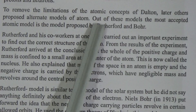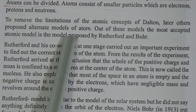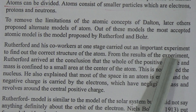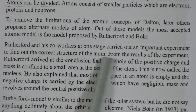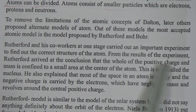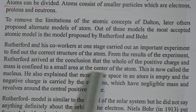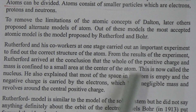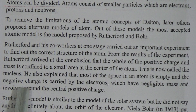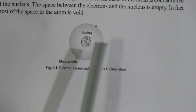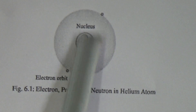To remove the limitations of the atomic concept of Dalton, later others proposed alternate models of atom. The most accepted atomic model is the model proposed by Rutherford and Bohr. Rutherford and his co-workers carried out an important experiment to find out the structure of the atom. From the result, Rutherford arrived at the conclusion that the whole of the positive charge and mass is confined to a small area at the center of the atom. This is called the nucleus. The nucleus consists of protons and neutrons.